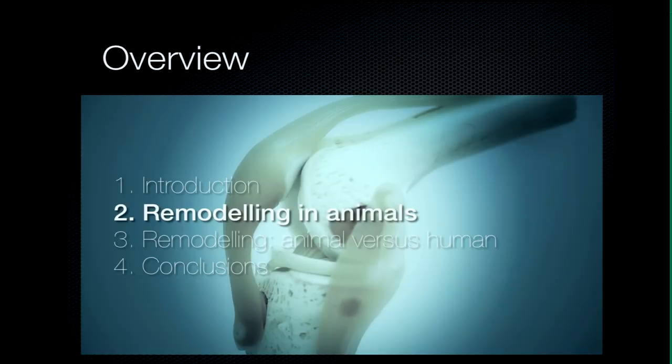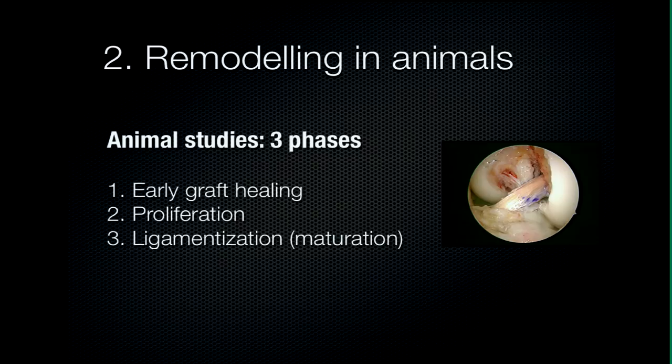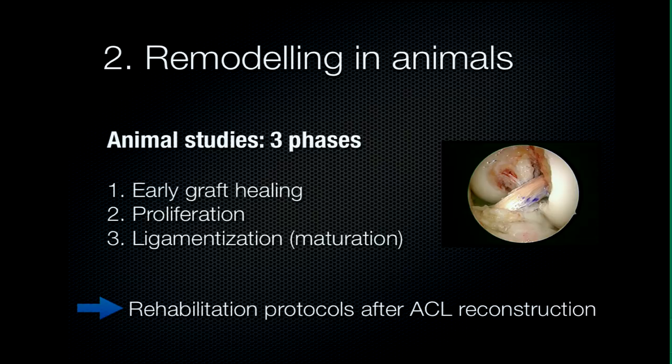What do we know about remodeling in animals, and why is this important? In animal studies, there have been three phases of remodeling. Although remodeling of the graft is a continuous process, each phase has specific characteristics. These three phases are: the early graft healing phase, the proliferation phase, and the ligamentization phase — also called the maturation phase by some authors. The data from these animal studies has been extrapolated to the human ACL rehabilitation protocols that we use today. Is it still valid for human rehabilitation? We'll get back to that.